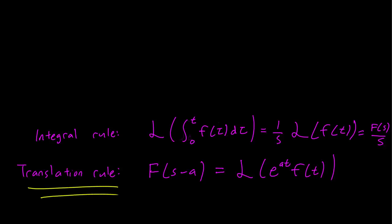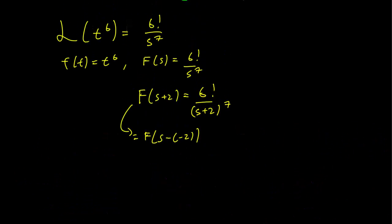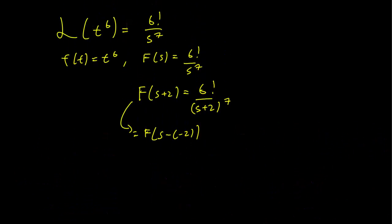Our translation rule says that capital F(s-a) is equal to the Laplace transform of e^(at) times little f(t), and this is going to be equal to the Laplace transform and here of course a is minus 2.